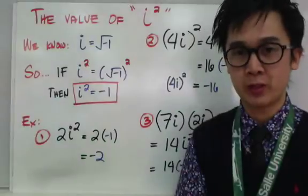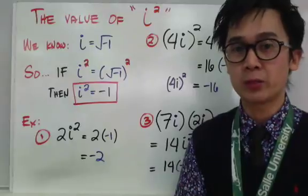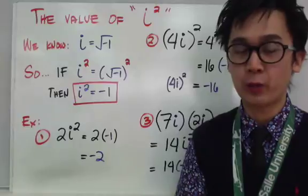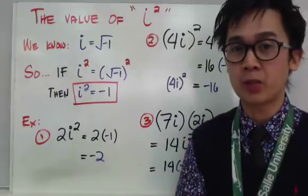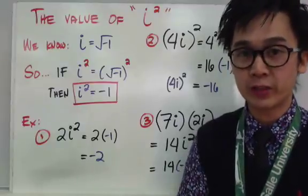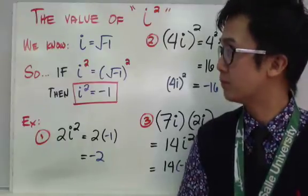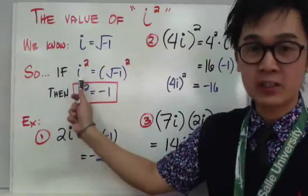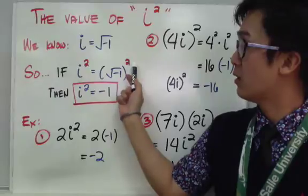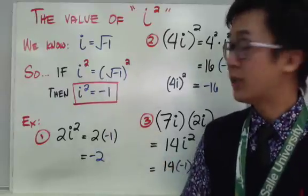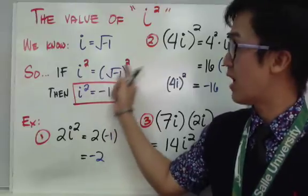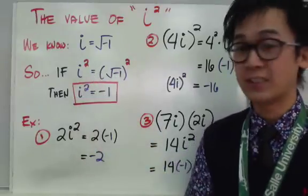Let's multiply complex numbers. Before we can multiply complex numbers, you need to know what i squared is, because you will end up having i squared in your equation. We know that i, the imaginary number, is equal to the square root of negative 1. If we have i squared, we can simplify it as the square of the square root of negative 1, and since a square root and a square cancel each other out, i squared is therefore negative 1.